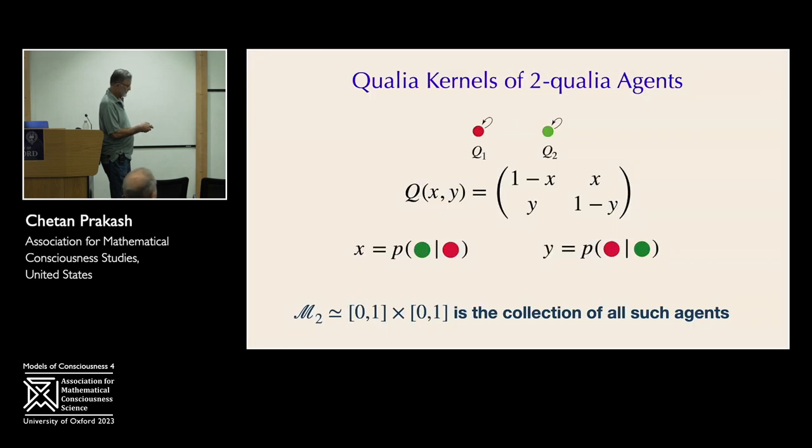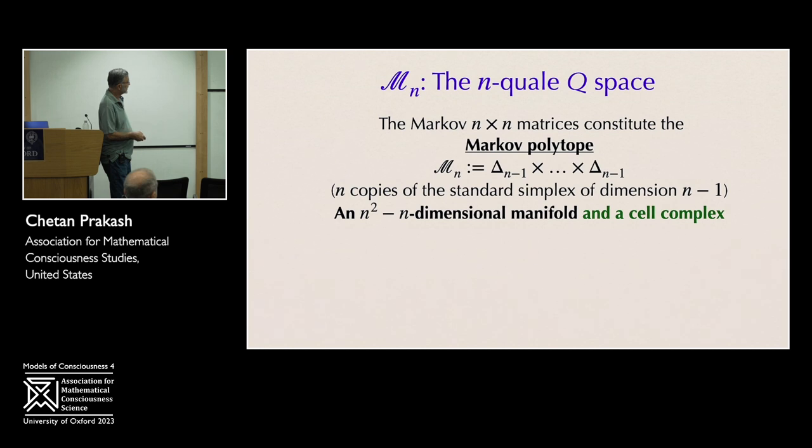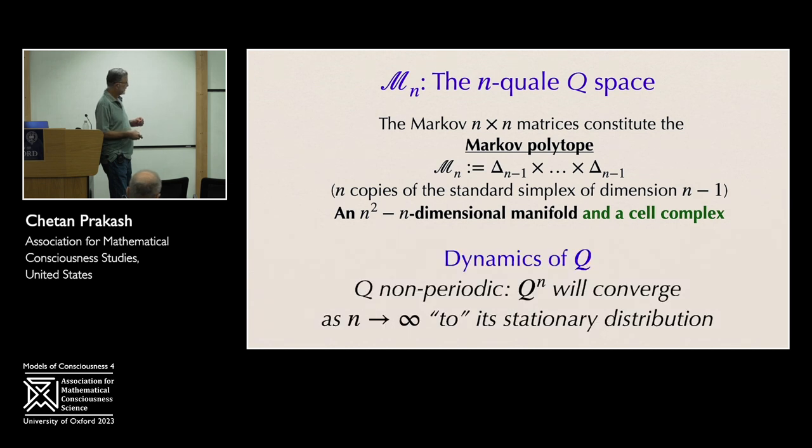Going back, to generalize this, we have the M qualia space, which is, in general, you have a state space of size N. And then the Markov polytope, as we call it, which is the collection of all Markov matrices, is a product of the standard simplex of dimension N minus one. There are N of them.